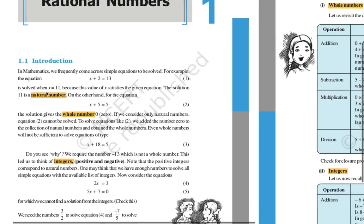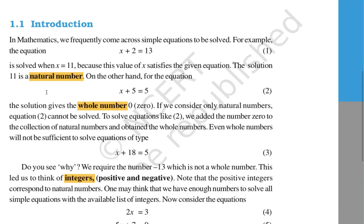There are natural numbers, whole numbers, and integers. On the number line, we represent different kinds of numbers. Natural numbers means counting numbers — that is 1, 2, 3, 4, 5, 6, 7, 8, 9, 10 and so on.